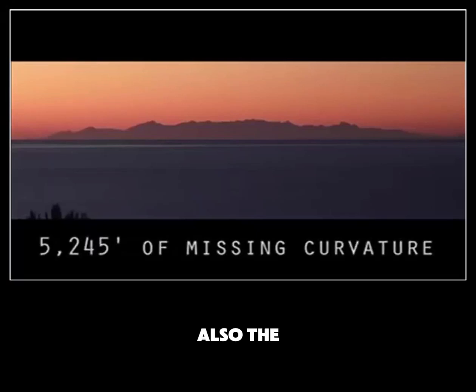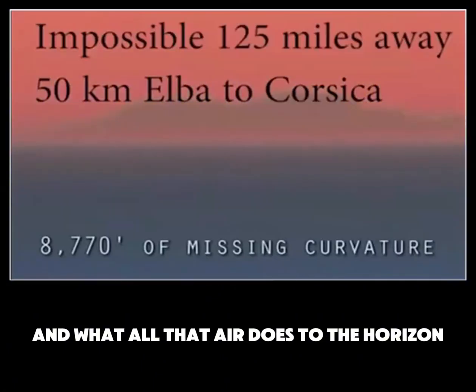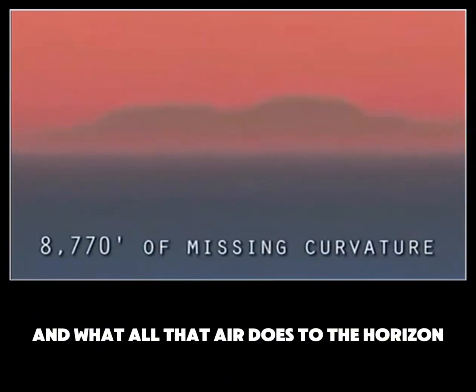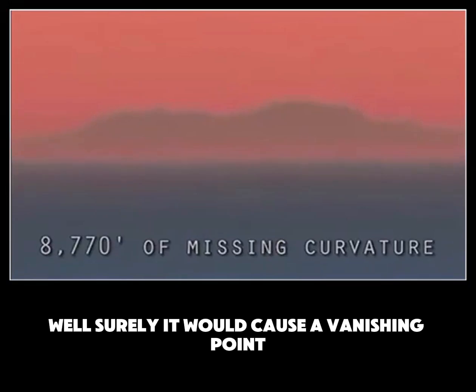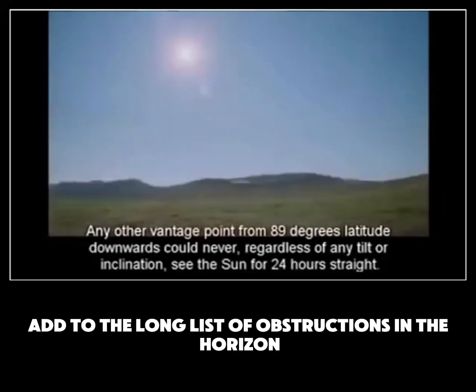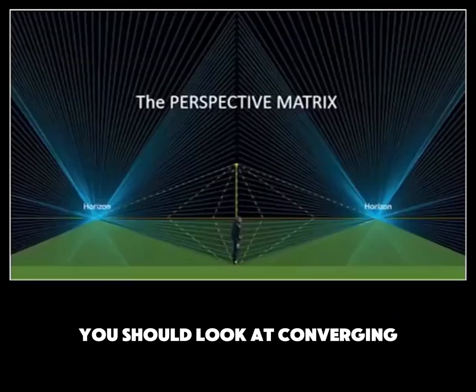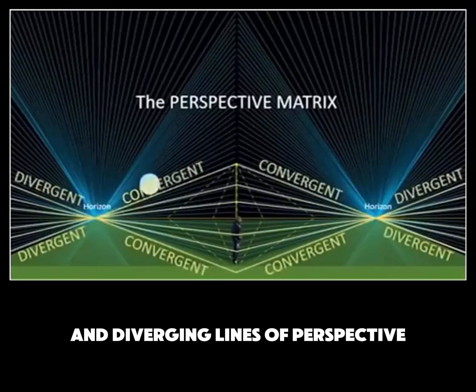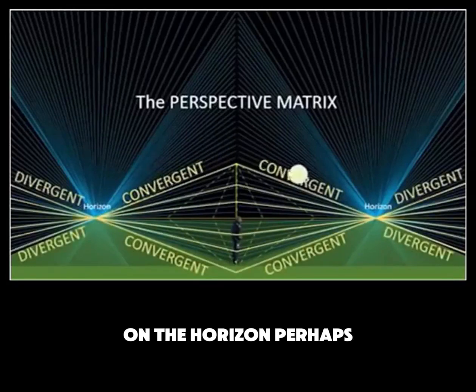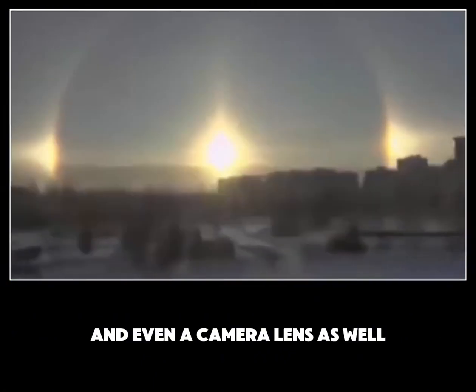The water line can also cause boats to look like they are floating and other really funny visual effects. Now imagine looking at a sunset over the ocean and what all that air does to the horizon — surely it would cause a vanishing point. Clouds compounded also add to the long list of obstructions at the horizon. For further research, you should look at converging and diverging lines of perspective on the horizon, and perhaps consider the curvature of the lens of our eye and even a camera lens as well.